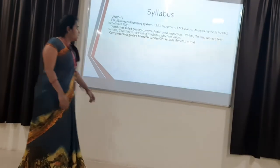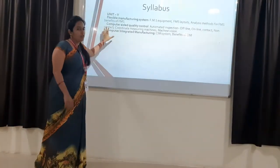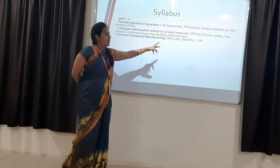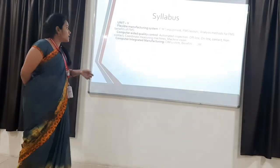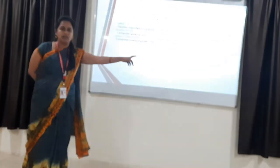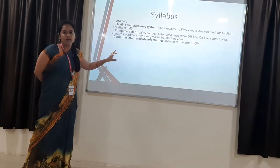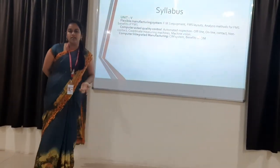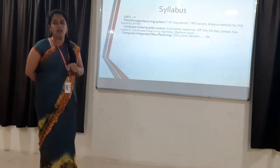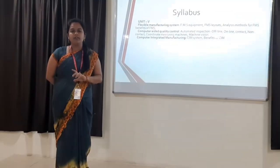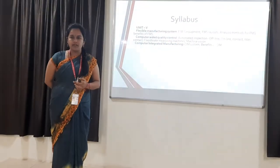Computer Aided Quality Control — we will be checking the quality of the final product. Different techniques are available: online inspection, contact, and offline inspections. You can see CMM — Coordinate Measuring Machines — and machine vision. By using laser beams, we are able to check where the defect is. That defect is rectified and sent back to the manufacturing sector to change or reduce it.